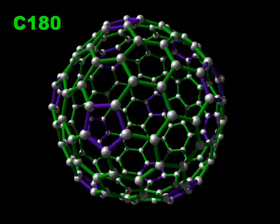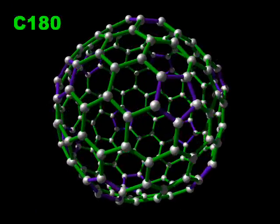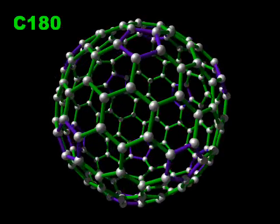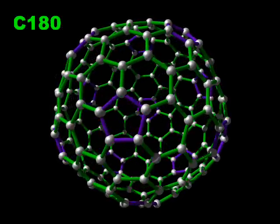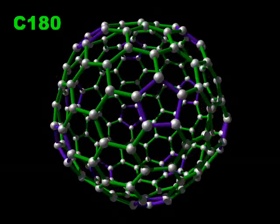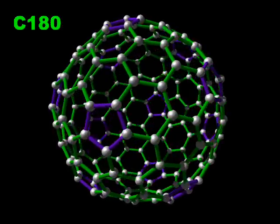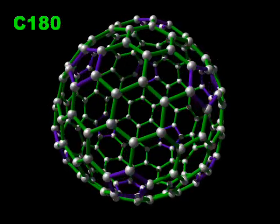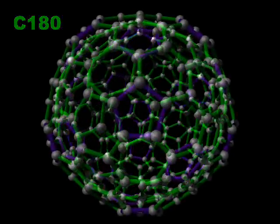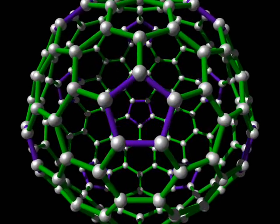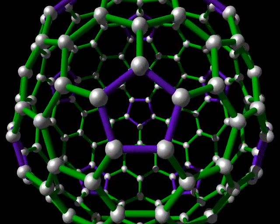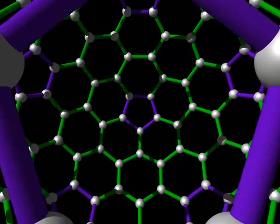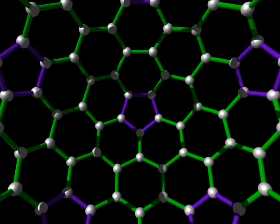Many other fullerenes are known. The next most common example is C70, which is a stretched C60 molecule. Other examples include C180 and C240, both of which are spherical. All of the higher fullerenes contain the same 12 five-membered rings, but differing numbers of six-membered rings.